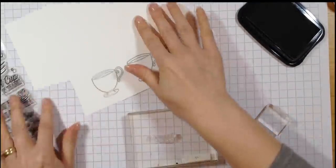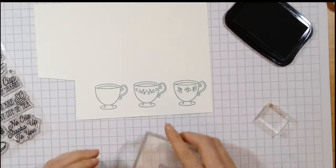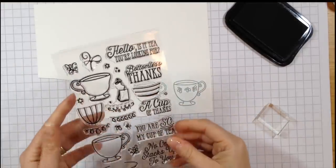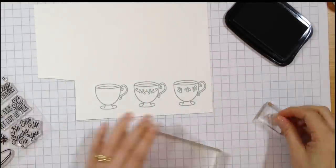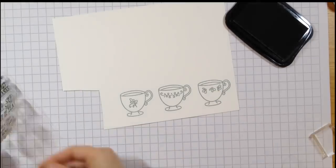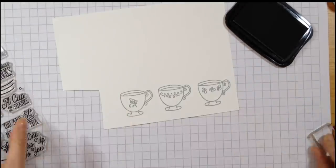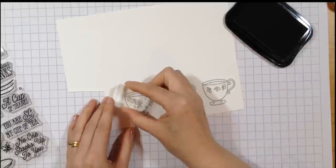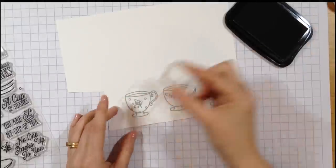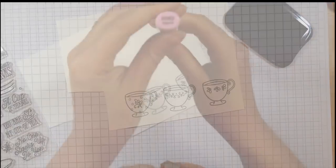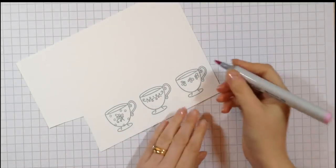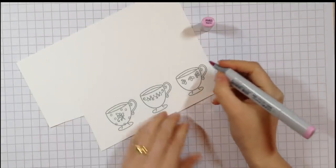The second design is going to be one of the border images, and then for the third one I'm taking one of the little motif designs. There's a tiny little polka dot stamp in there too, so I'll just add a few little polka dots to the third cup.